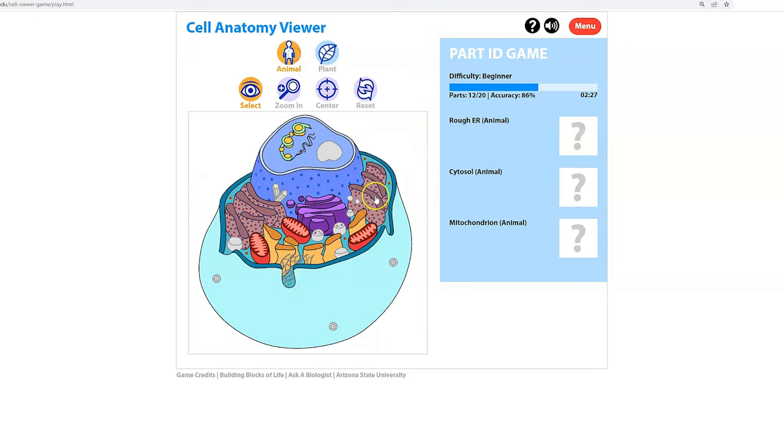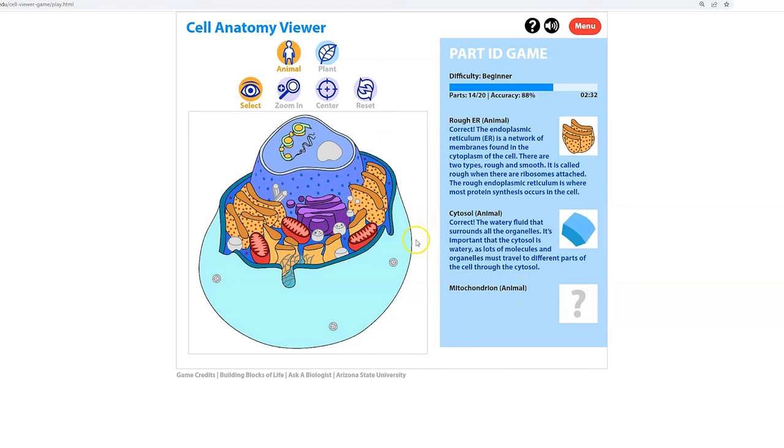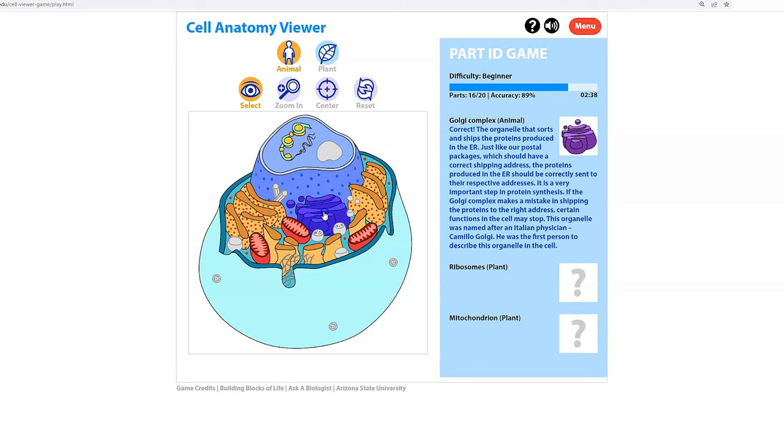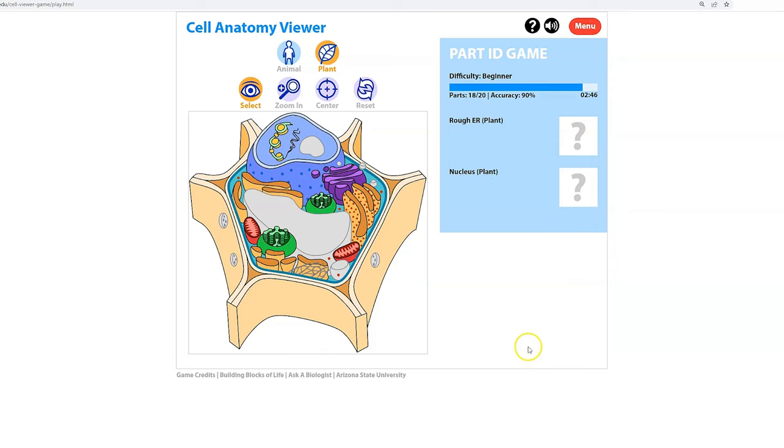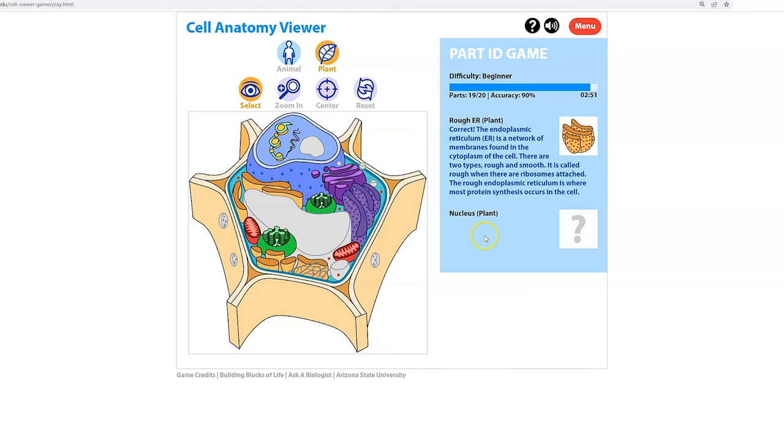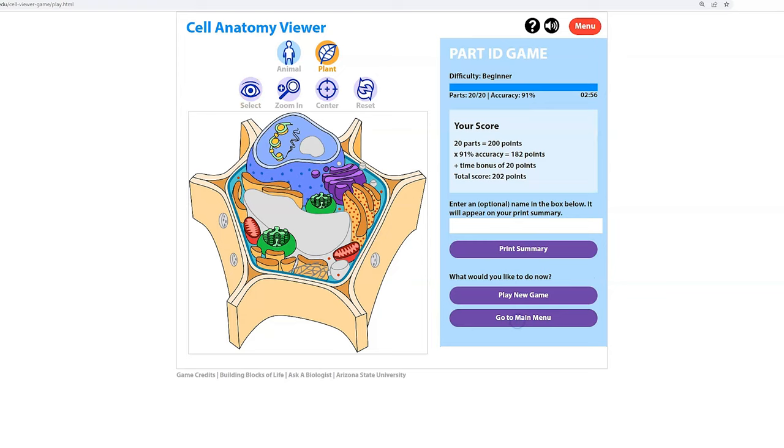Rough ER, animal. Cytosol, animal. Mitochondria, animal. Golgi complex, animal. Ribosomes, plant. Switch over to the plant. The mitochondria for the plant. Rough ER for the plant. The nucleus for the plant. We have completed this round and we can go back and look at the results again.